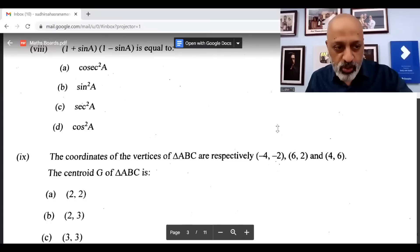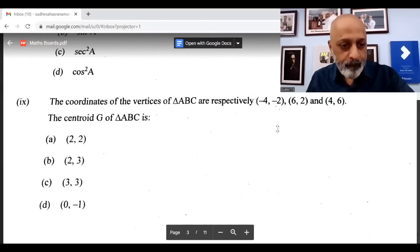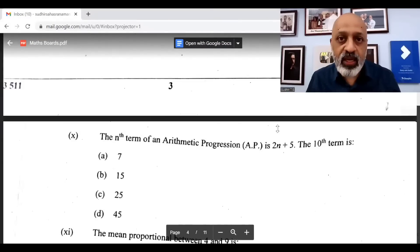The eighth one, the correct option is option D: cos 2A. The ninth question, the correct option is option A: 2√2. The tenth question, the correct option is C: 25.